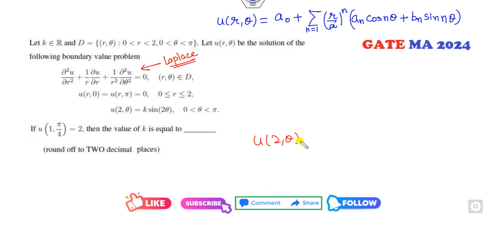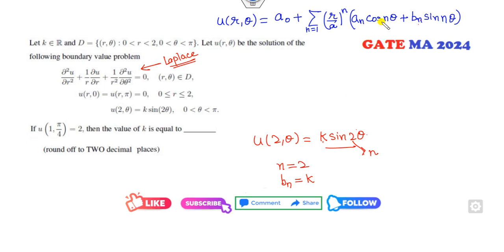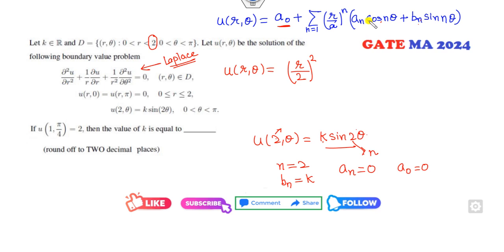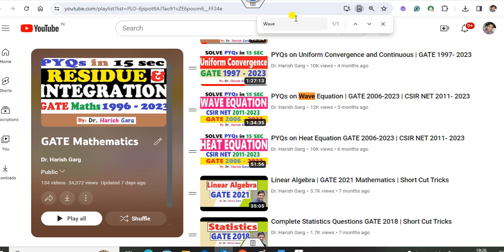The boundary condition is given as k sin(2 theta). Comparing with the general solution, n equals 2. Since there is no cosine term, aₙ equals 0. There is no constant term, so a₀ equals 0. With n equal to 2 and bₙ equal to k, the solution becomes (r/a)² times k sin(2 theta).